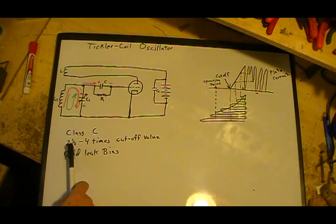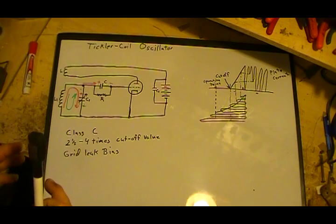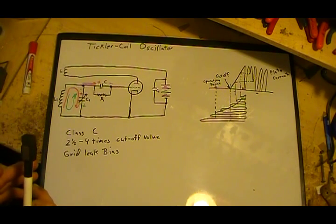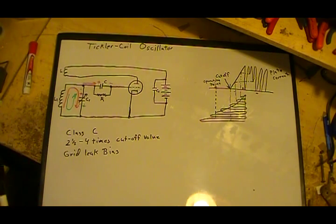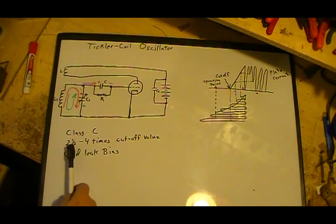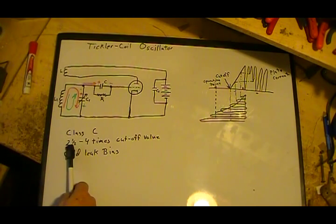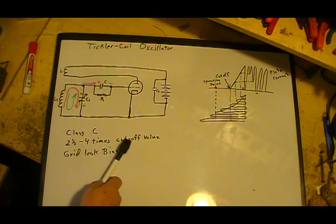Which basically means that their normal operating point is way past cutoff, way more negative than cutoff. So they run somewhere around two and a half to four times the cutoff value.